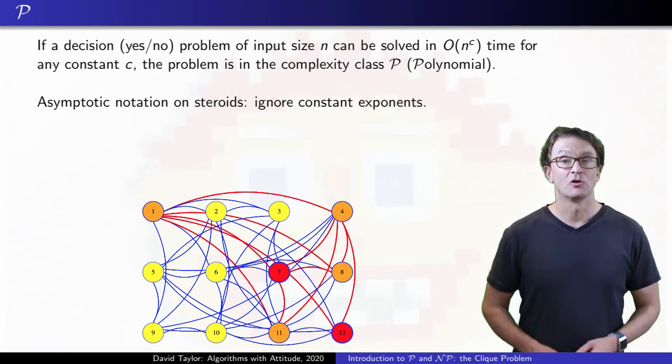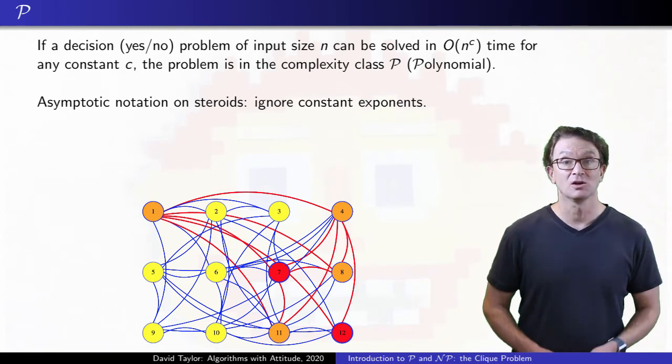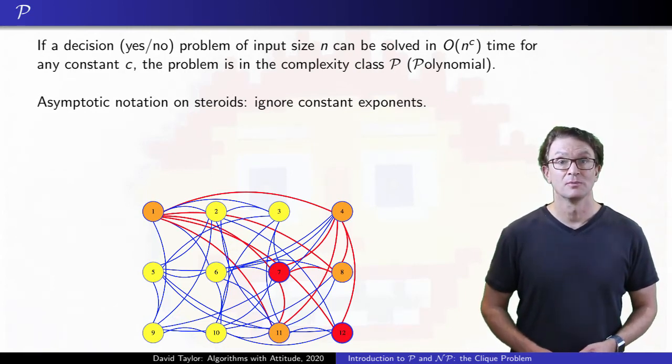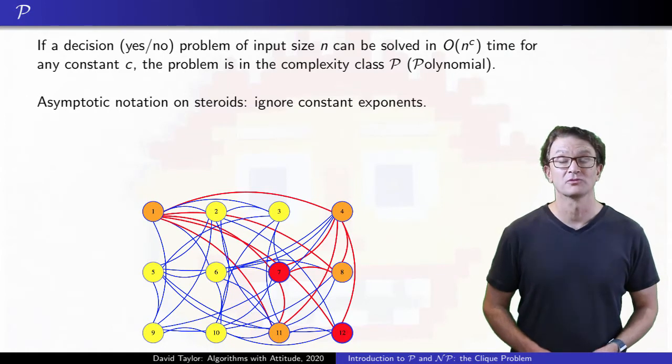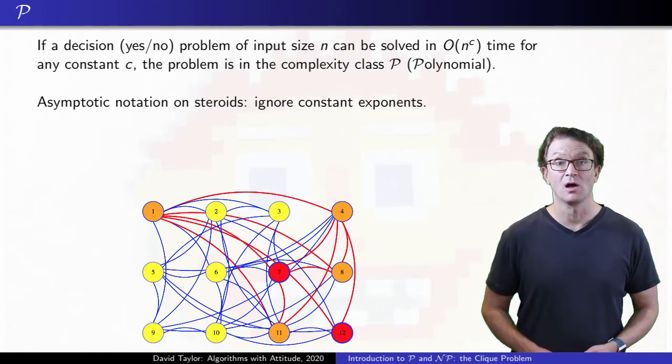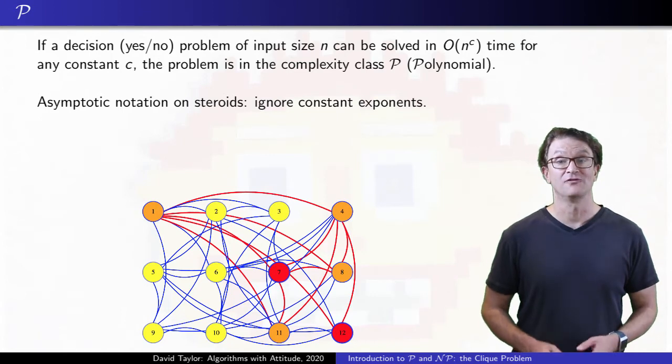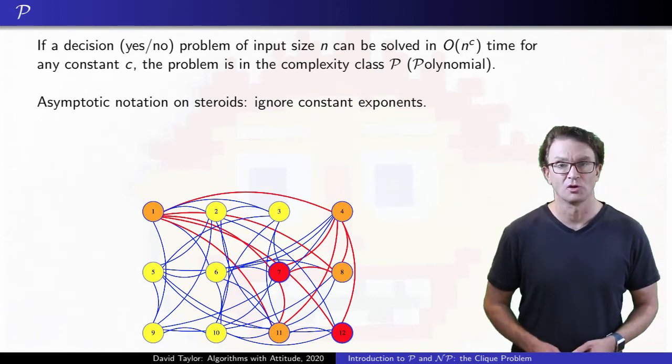Roughly speaking, for real world problems that come up, if we can find a polynomial time algorithm to solve them, the thought is that those problems can be solved efficiently. Of course, n to the 100th algorithms are polynomial, but not efficient, but those don't come up so much.